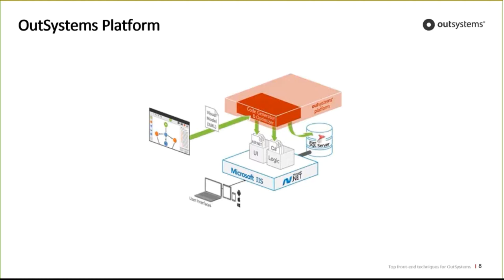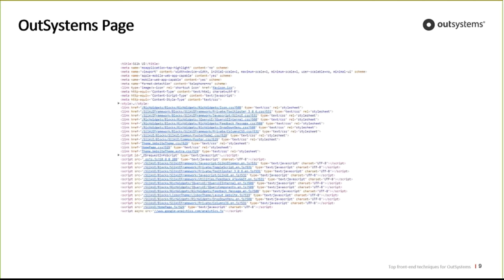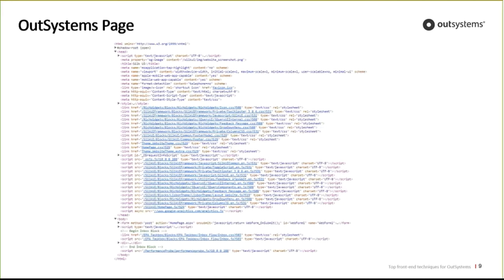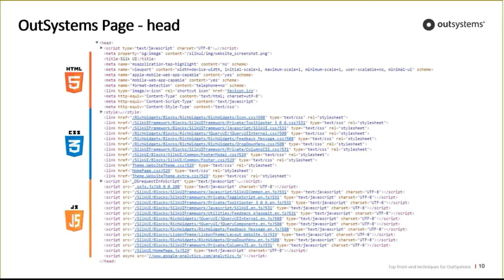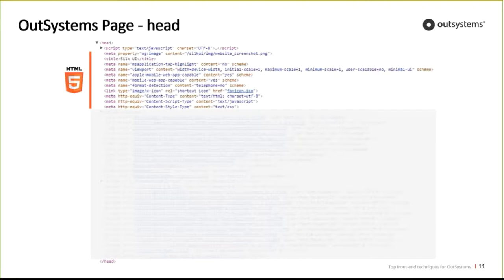What is actually sent to the client is HTML. Analyzing a typical HTML page, starting with the head, we can see three different areas: HTML, CSS, and JavaScript. By HTML I mean meta tags, which are responsible for responsiveness and enabling our application to be a web mobile app — for example, enabling users to add a responsive app to their home screen on iOS.